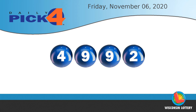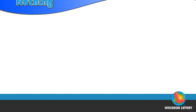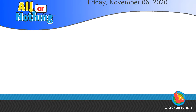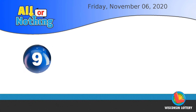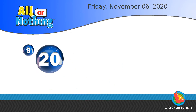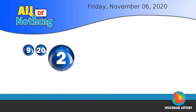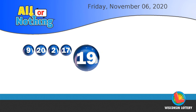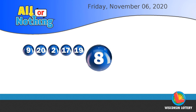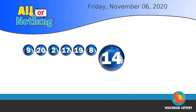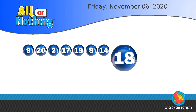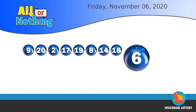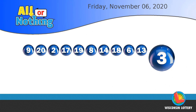The all or nothing numbers are nine, twenty, two, seventeen, nineteen, eight, fourteen, eighteen, six, thirteen, three.